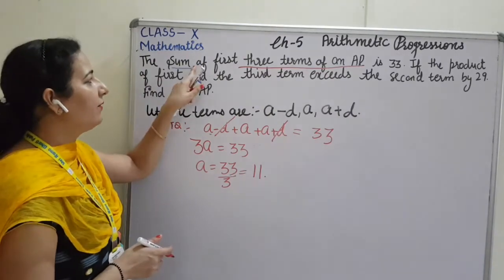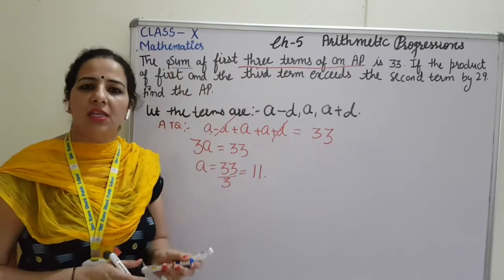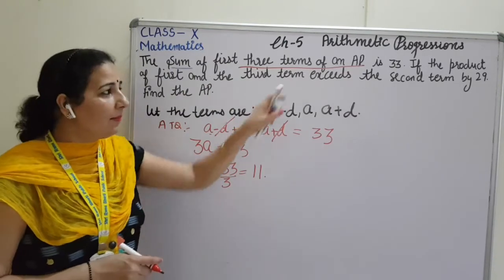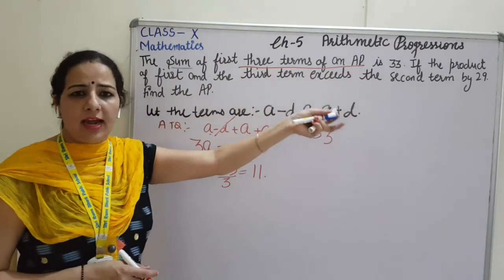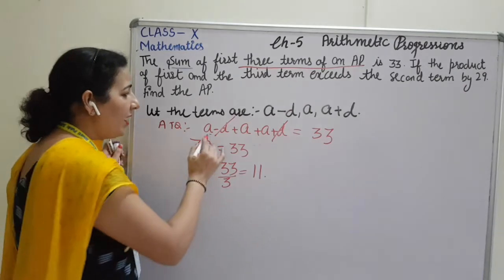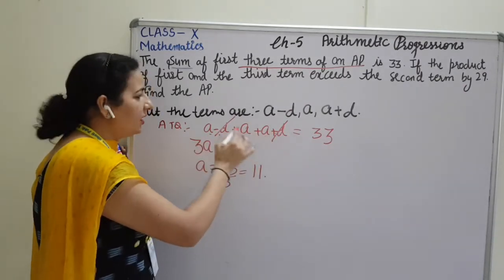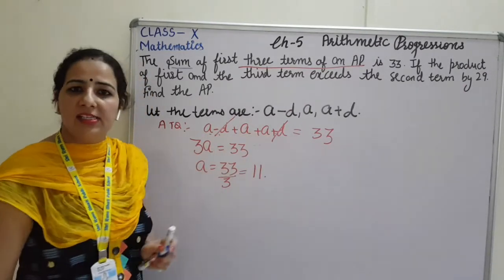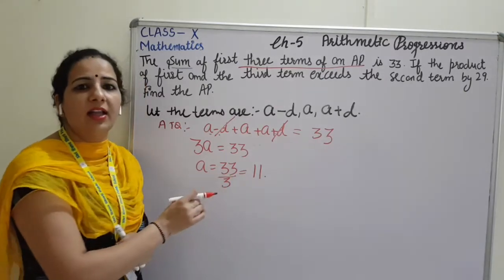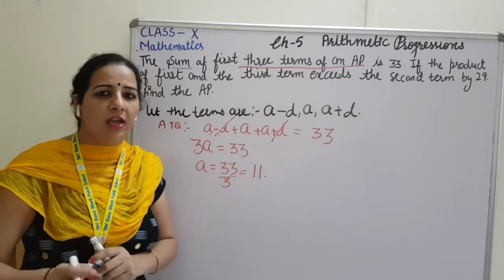In 99% questions, they always will give the first line that the sum of the first 3 terms of an AP is 33, 63, any number they will provide us. Whenever you will add these 3 numbers, your D and D will be cancelled and you can easily calculate the value of A in all the questions.